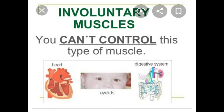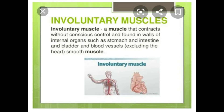In our eyes, they help us to see objects clearly. Those in our chest help to breathe. Involuntary muscles are also known as smooth muscles.